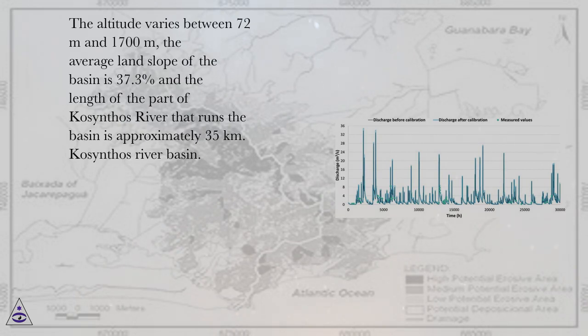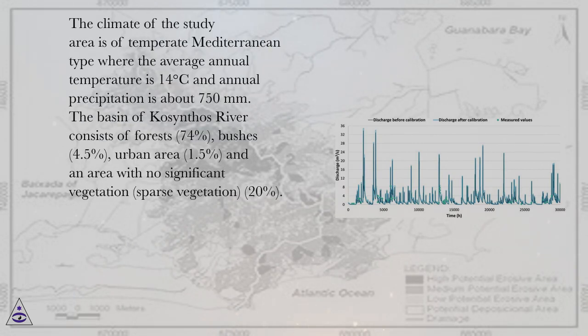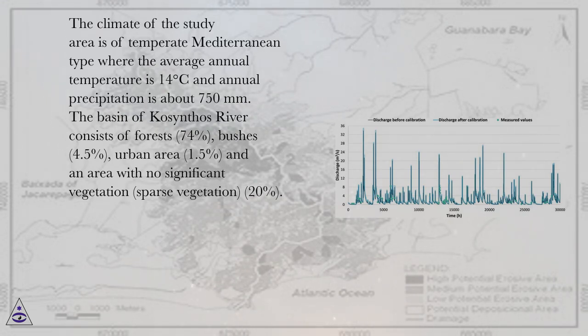The climate of the study area is of temperate Mediterranean type, where the average annual temperature is 14 degrees Celsius and annual precipitation is about 750 millimeters.